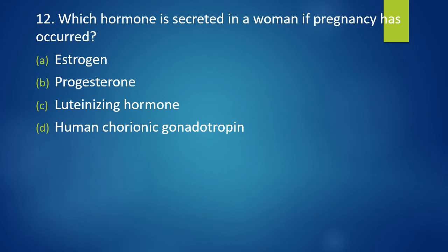Question 12. Which hormone is secreted by women if pregnancy has occurred? Estrogen, progesterone, luteinizing hormone, human chorionic gonadotrophin. Hormone secreted in a woman if pregnancy has occurred? Correct answer is option D. Human chorionic gonadotrophin.